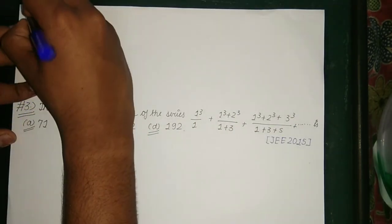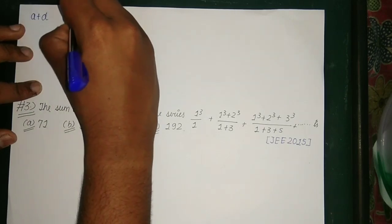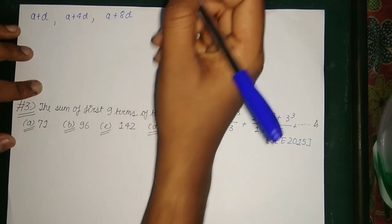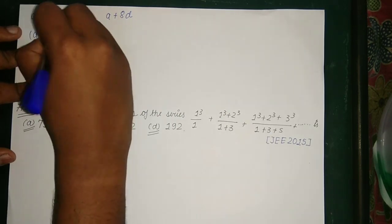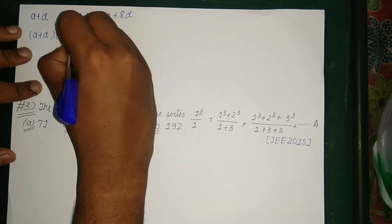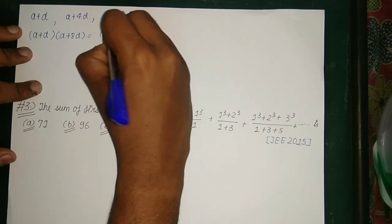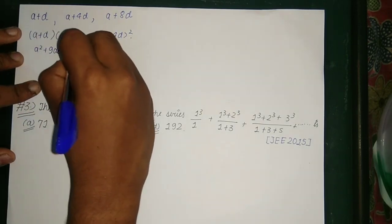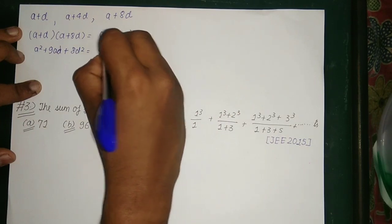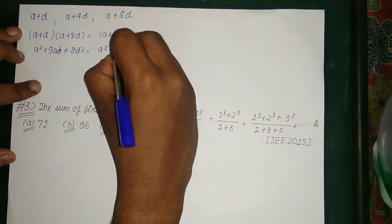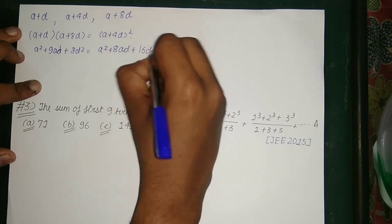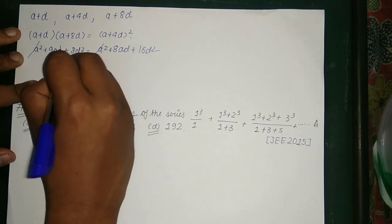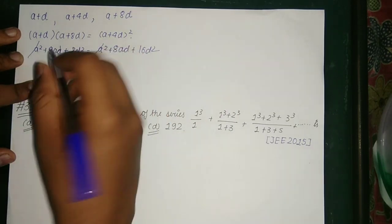We are given that the 2nd term (a + d), the 5th term (a + 4d), and the 9th term (a + 8d) constitute a GP. As they form a GP, the product of extremes equals the middle term squared: (a + d)(a + 8d) = (a + 4d)². Solving this, a² + 9ad + 8d² = a² + 8ad + 16d². The a² terms cancel, giving ad = 8d², and dividing by d we get a = 8d.